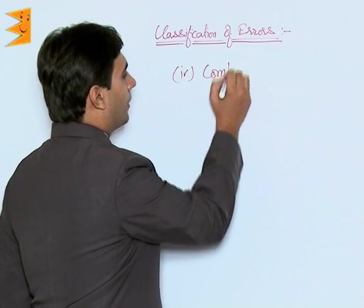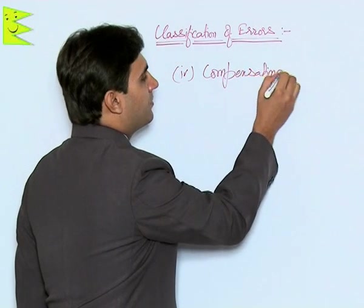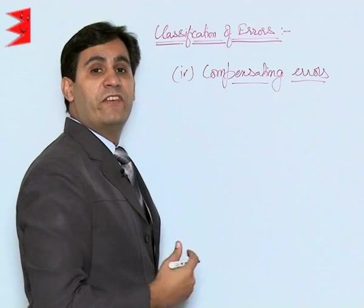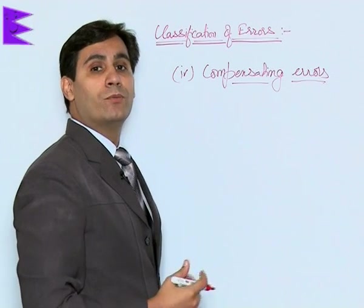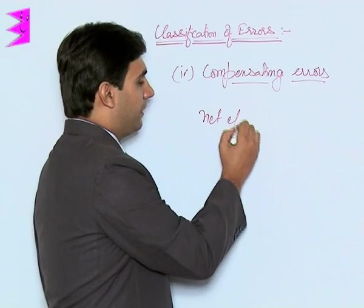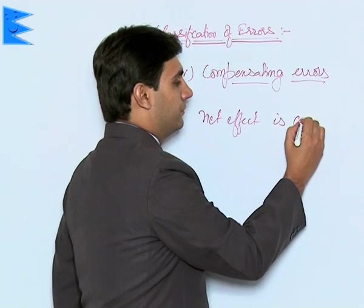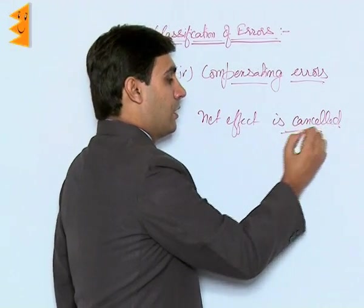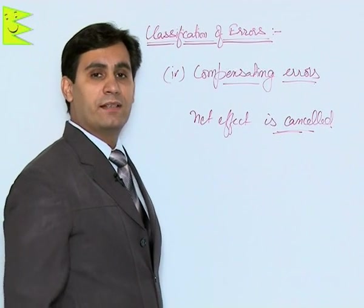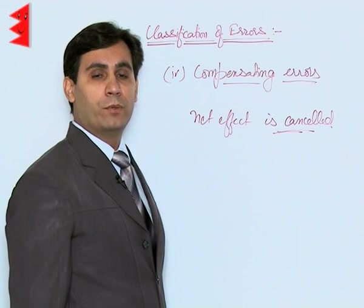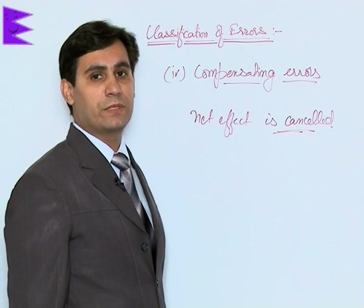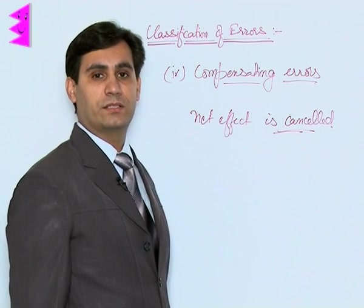Next are compensating errors. As the name suggests, these are errors whose net effect is cancelled out. There are two or more errors committed in a manner that their net effect cancels out — it appears that debit and credit balances are equal, but the errors are still present. In all, we have studied four types of errors: errors of commission, errors of omission, errors of principle, and compensating errors.